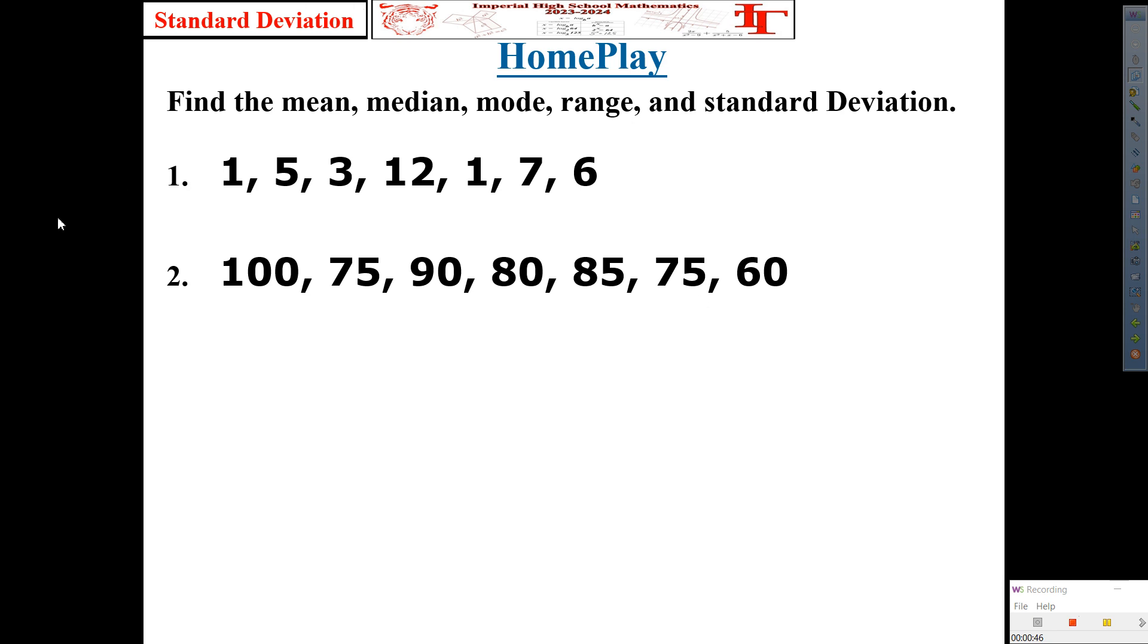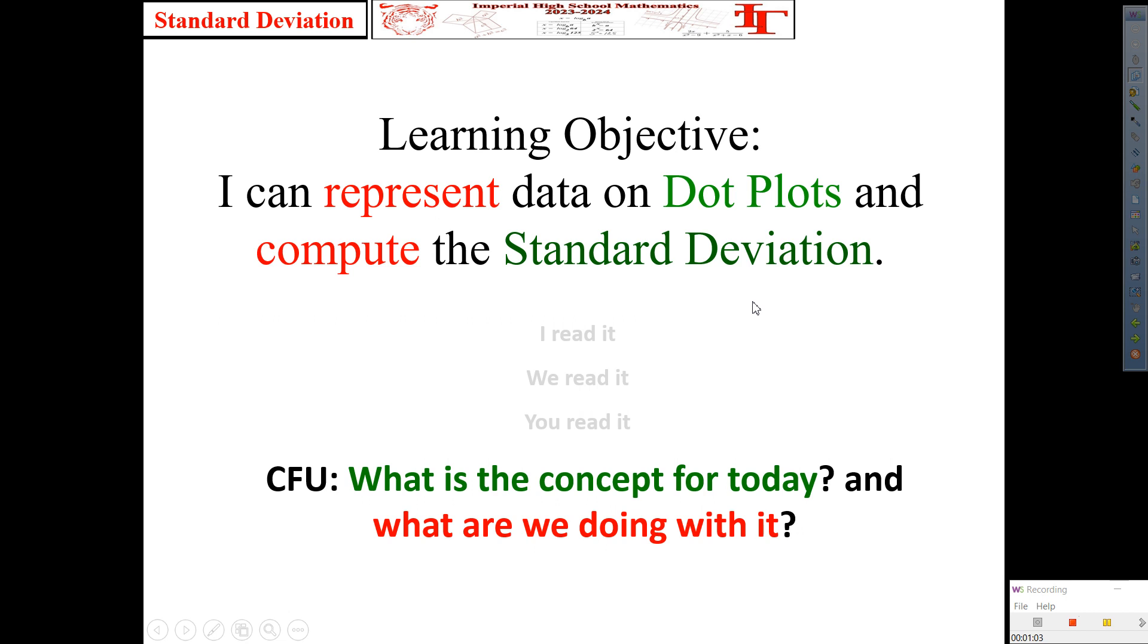Let's go from the corner. All right. With that said, our objective for today, I can represent data on dot plots and compute the standard deviation. Today's Frayer model is going to be on dot plots. The other main concept, which is standard deviation, like I mentioned, I'm going to slowly introduce a couple components today just so that you're not here. So, with that said, what are we doing with dot plots? We're representing data using dot plots. And for standard deviation, what are we doing? We're computing.